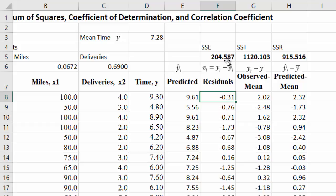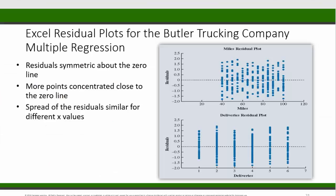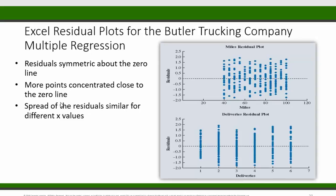The horizontal axis has miles in the first plot and deliveries in the second plot. These residual plots are taken from the textbook. You can see that both residual plots pretty much satisfy those three conditions. They are symmetric about the zero line — for each x value, there are a similar number of positive versus negative residuals, and more points are concentrated close to the zero line. The spread of the residuals is similar across different x values. These conditions do not have to be perfectly satisfied — we are fine as long as there is no strong violation.